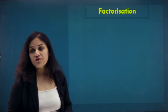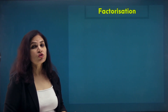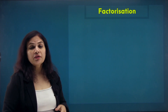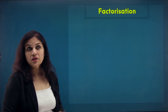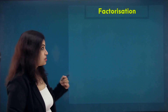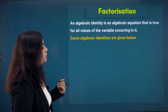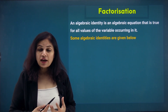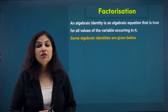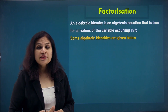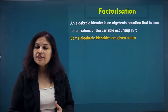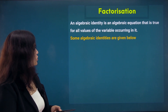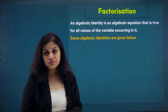The next segment of factorization is the most important and most useful, which we use for solving greater problems and for simplifying larger calculations — that is, the use of algebraic identity. An algebraic identity is a proven equation, a pattern of statement that is true for all sets of real numbers. So an algebraic identity is an equation that is true for all the values of a variable occurring in it.